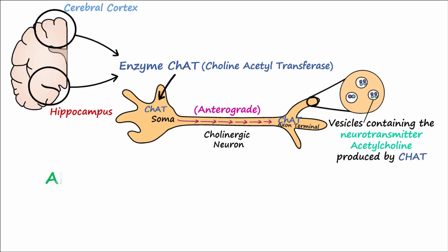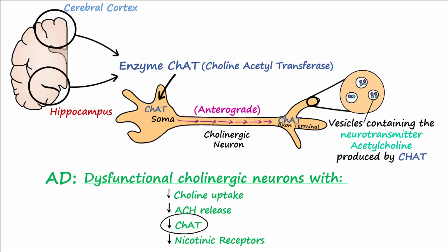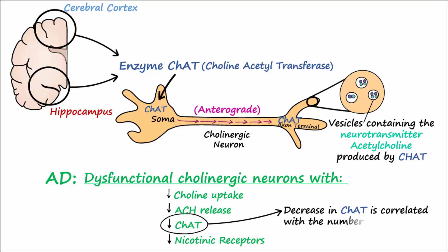In AD, there are decreased and dysfunctional cholinergic neurons that show decreased choline uptake, decreased acetylcholine release, decreased ChAT, and decreased nicotinic receptors. The reduction in ChAT in Alzheimer's disease can be correlated with the number of plaques and disease severity.